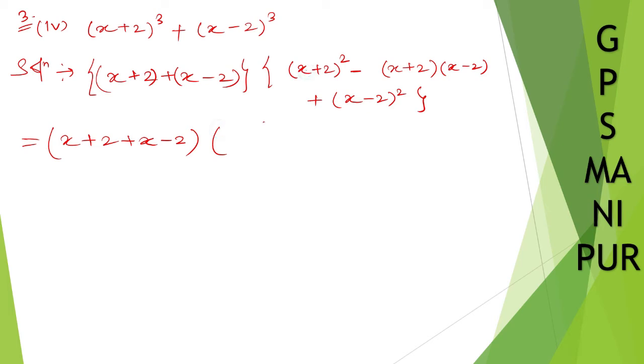And now here (x + 2)² it will be x² + 2ab, plus b², that is 2² minus, a + a minus b. It will be x² - b².